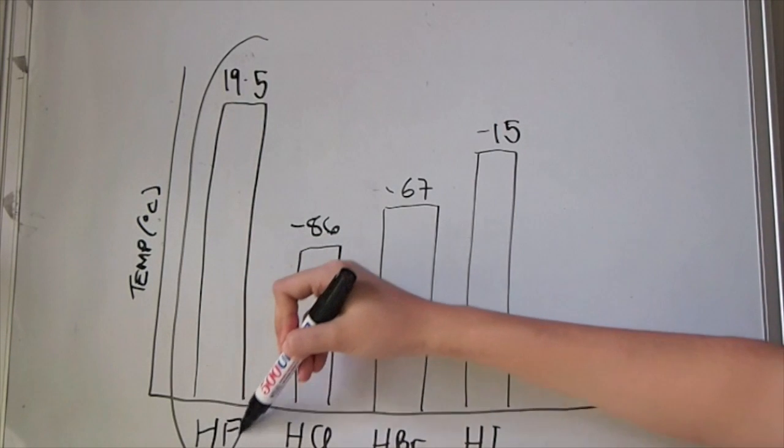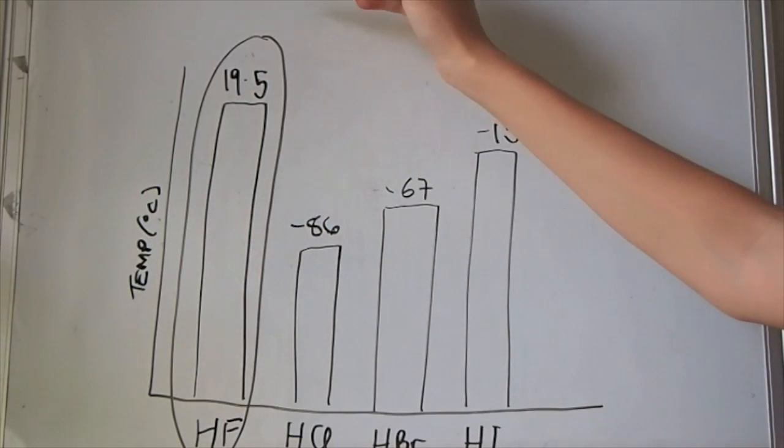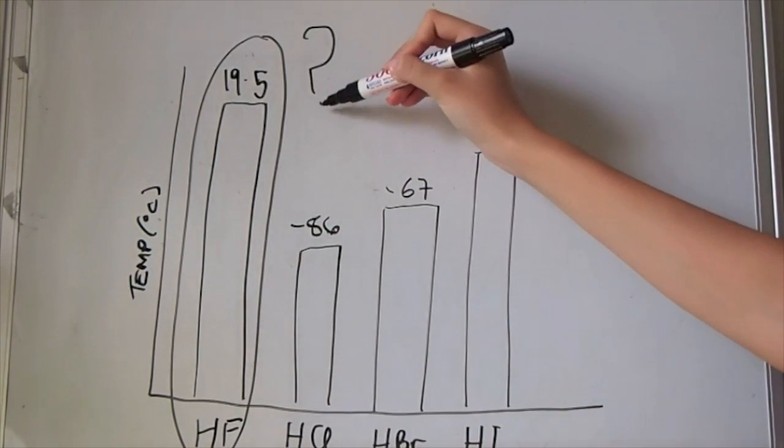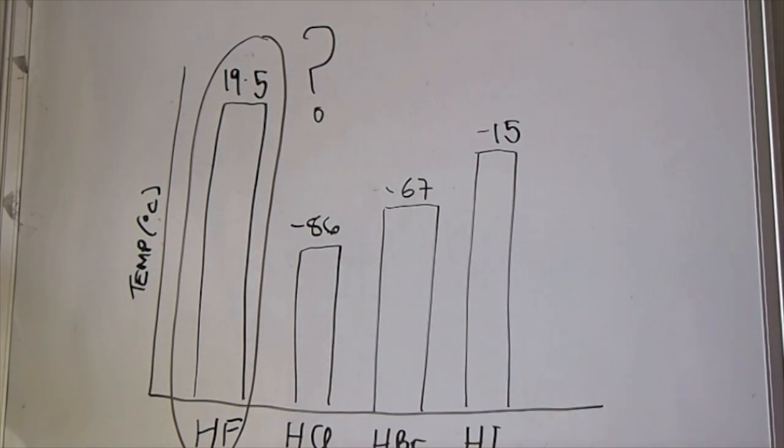The data shows that hydrogen fluoride has the highest boiling point, but shouldn't it follow the trend and have the lowest? Hydrogen fluoride is a very unusual hydrogen halide as it does not follow the common trend.